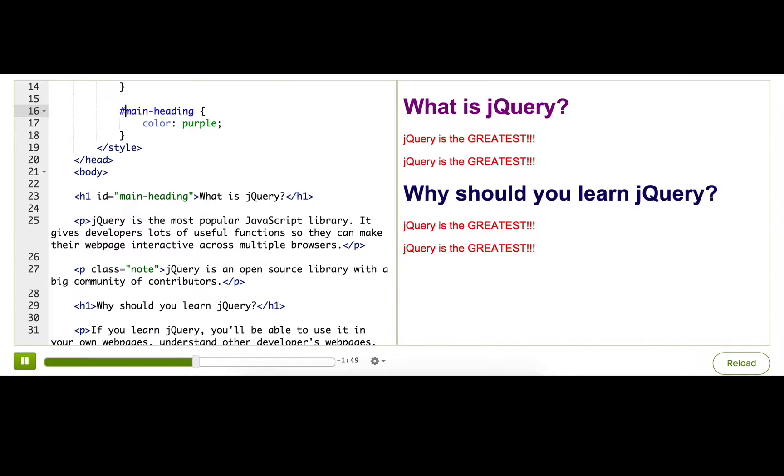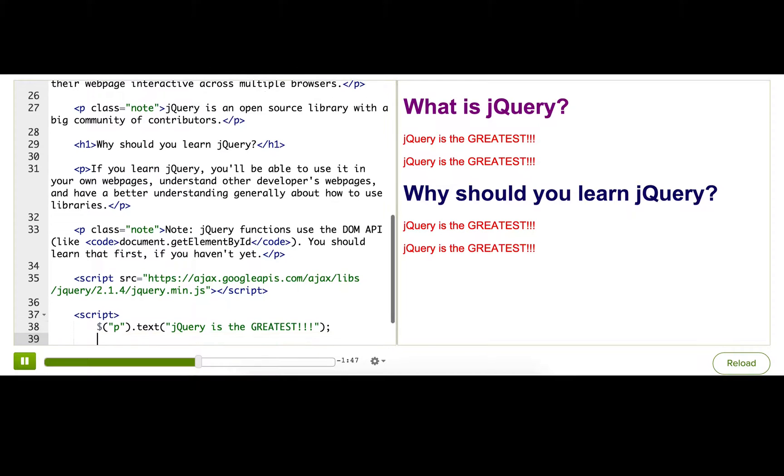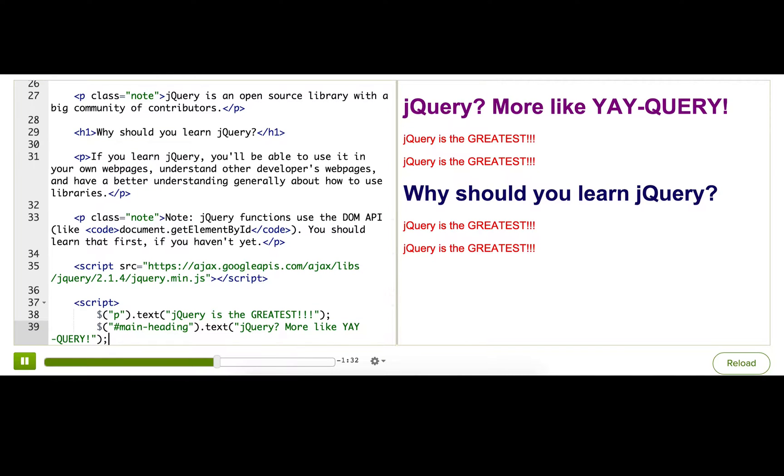Now I'm going to go down to my JavaScript, start a new call to jQuery, and pass in that same selector, main heading, starting with that pound sign. And then set some text, jQuery, more like yay query. Great, now it's purple and has that new text.